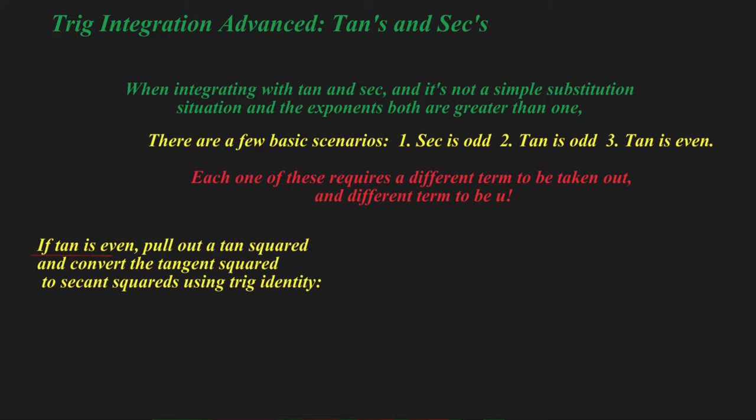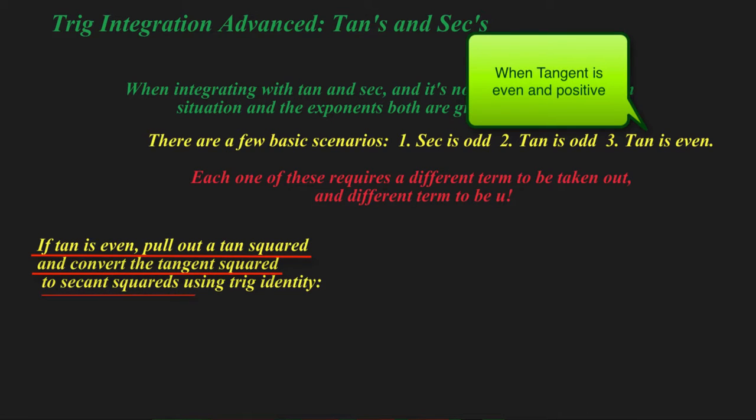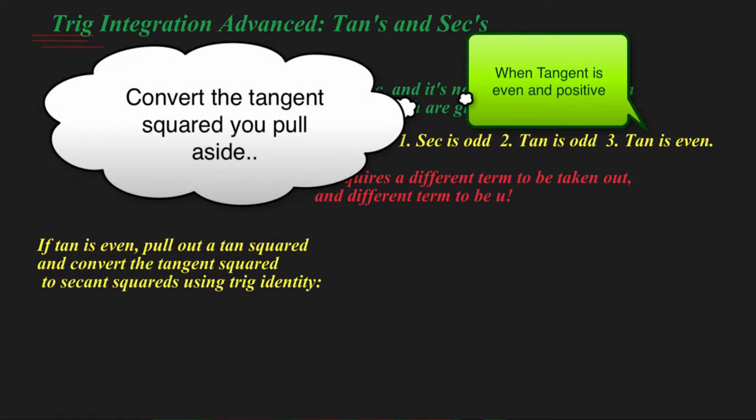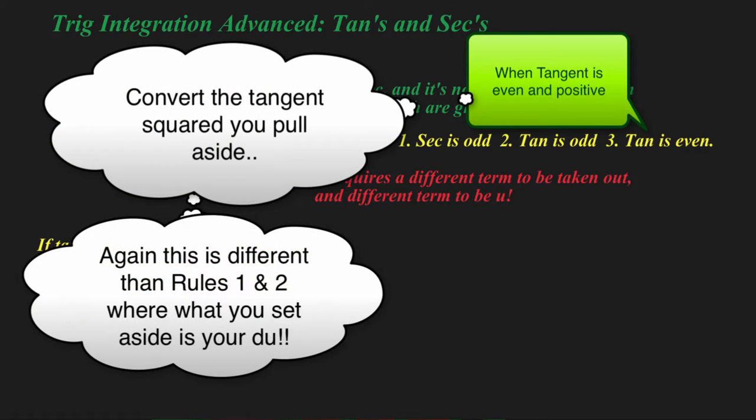And in this case, if tangent is even, what you're going to do is you're going to pull out a tangent squared and then use your trig identities to convert it into secant squareds. The actual tangent squared you're converting, not what's left as in before.